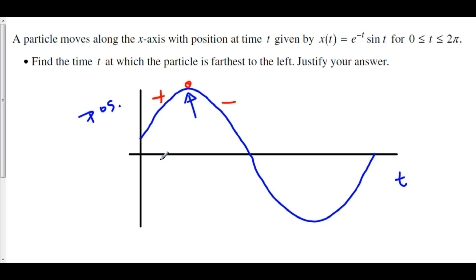Where is the particle farthest to the left? The answer is the point where velocity is negative before it and positive after it. The particle was moving in the negative direction, then turned around and went in the positive direction. The moment it was farthest in the negative direction is when velocity changes from negative to positive.